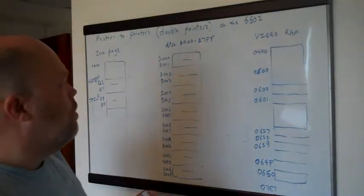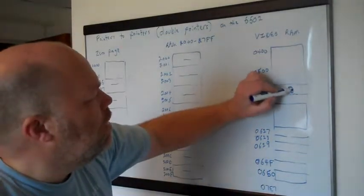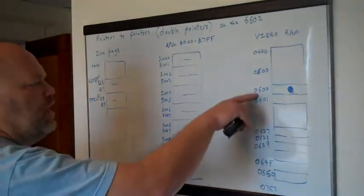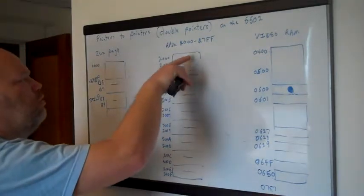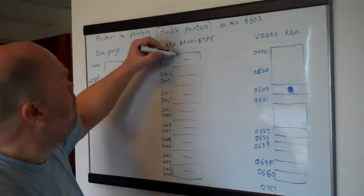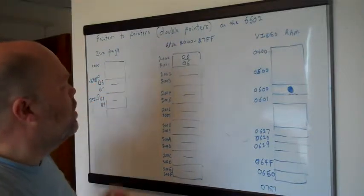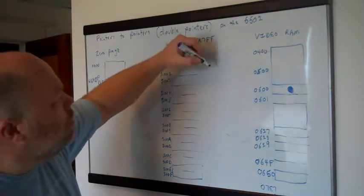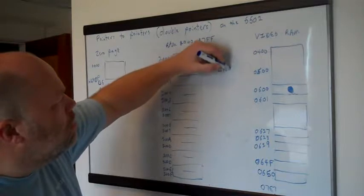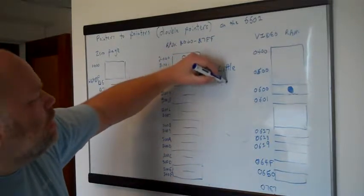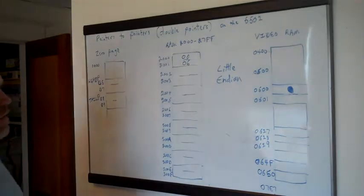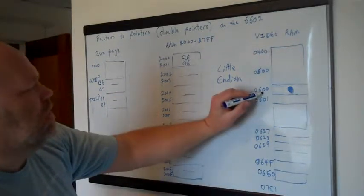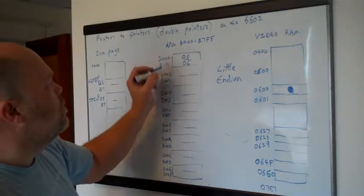So let's walk through it. We start out the game and put the head at 0600 — we just chose that location. We put it in the pointer list. Remember that on the 6502, addresses are always little-endian, which means the low byte comes first. So the bottom part of the address, the 00 in this case, comes first at memory location 2000, and then the high byte 06 comes second.